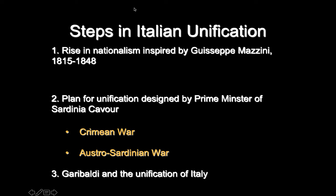There are a couple of steps in Italian unification. The first step is the rise of nationalism, inspired by Giuseppe Mazzini. A plan and its action is carried out by Cavour, the Prime Minister of Sardinia Piedmont — he's going to use two wars to get what he wants. And to truly unify the whole state, you have the leadership of Giuseppe Garibaldi and his band of red shirts.